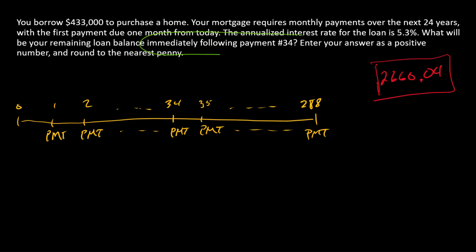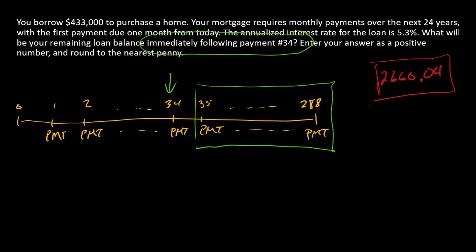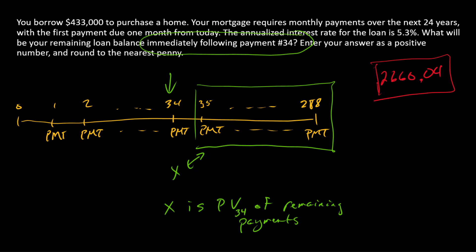The next step: we're going to try to pay off the loan immediately after payment number 34 — right here on the timeline. If you pay off the loan, you're going to swap the remaining payment stream for some lump sum amount X at that point. Think of X as the present value of the remaining payments. Since X happens at time 34, we subscript it with 34. How many remaining payments are there? 254 of them.